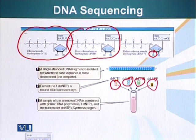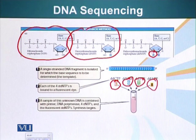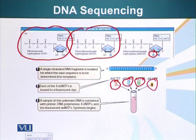So these di-deoxyribonucleosides each have a fluorescent molecule attached: A will emit yellow color, T will emit green color, G will emit blue color, and C will emit red color.